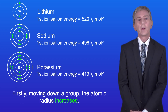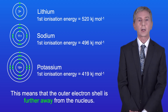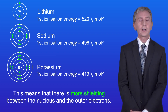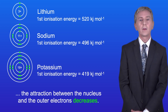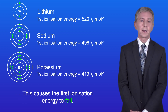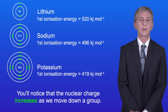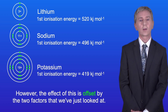Firstly, moving down a group the atomic radius increases, which means that the outer electron shell is further away from the nucleus. Secondly, going down the group the number of internal energy levels also increases, meaning there's more shielding between the nucleus and the outer electrons. Both of these factors mean that going down a group the attraction between the nucleus and the outer electrons decreases, causing the first ionization energy to fall. Note that the nuclear charge increases as we move down a group, however the effect of this is offset by the two factors we've just looked at.